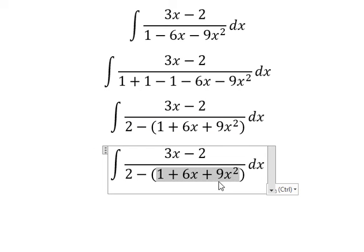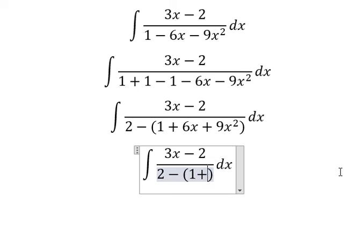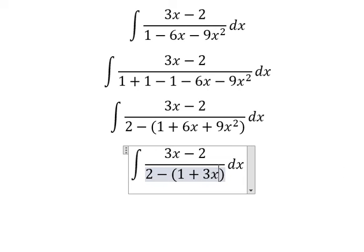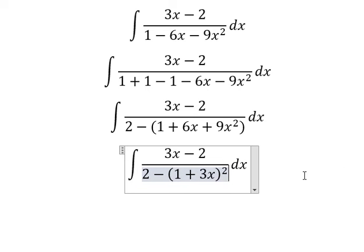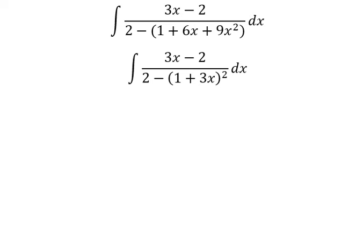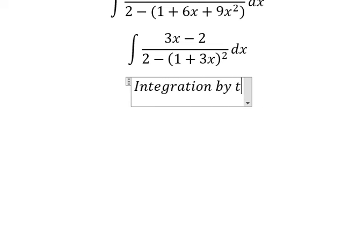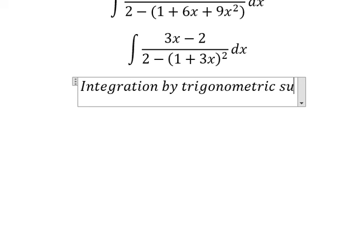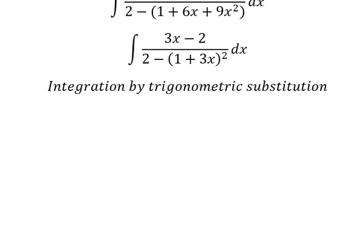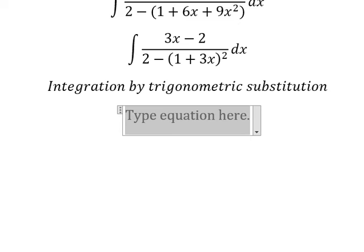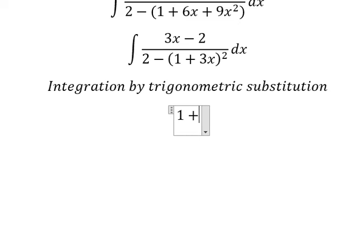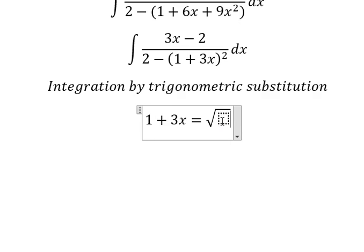This is about an identity, so we have 1 plus 3x squared. Now we can use integration by trigonometric substitution. I will put 1 plus 3x equals to the square root of number two times sin(t).